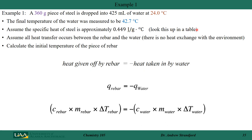We look up the specific heat of steel and of water from a table. We assume that heat transfer occurs only between the rebar and the water — no heat is exchanged with the outside environment, meaning we're in a very good calorimeter. We want to calculate the initial temperature of the rebar. The heat given off by the rebar equals negative the heat taken up by the water: q_rebar = −q_water. The rebar loses heat (negative sign) and the water gains heat (positive).